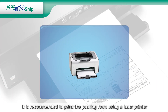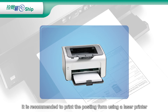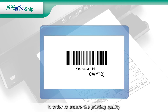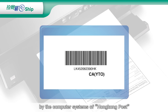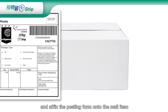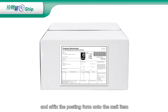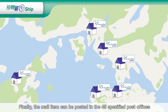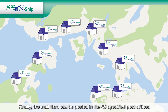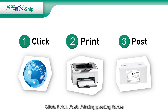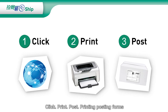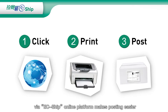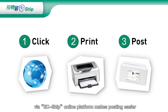It is recommended to print the posting form using a laser printer in order to ensure the printing quality, which will facilitate accurate barcode scanning by the computer systems of Hong Kong Post. Affix the posting form onto the mail item. Finally, the mail item can be posted in the 45 specified post offices. Click Print Post. Printing posting forms via the ECSHIP online platform makes posting easier.